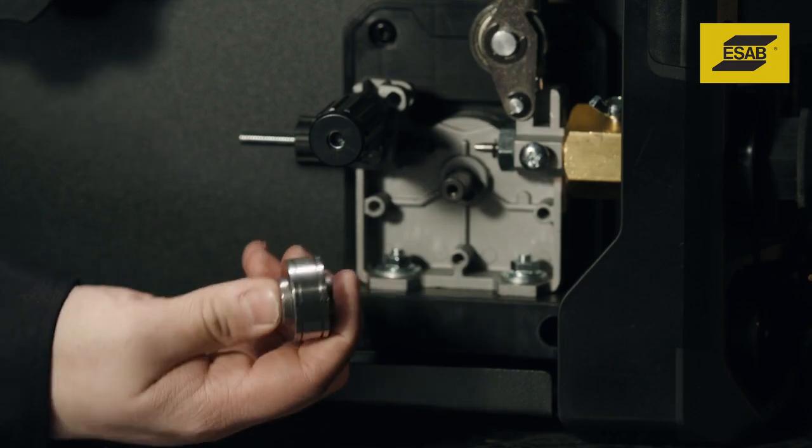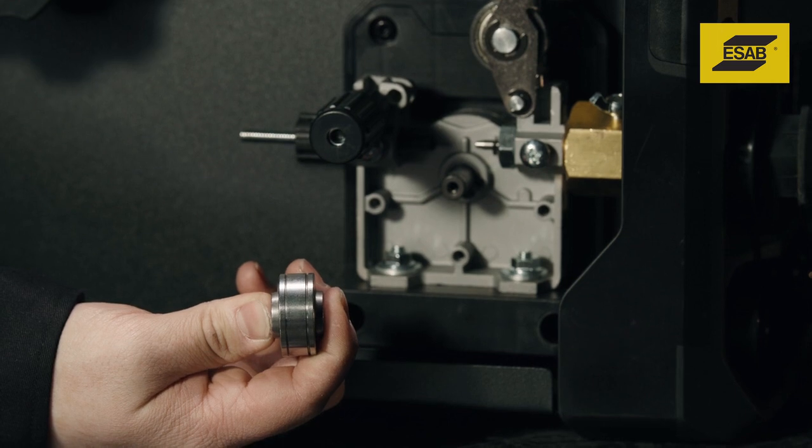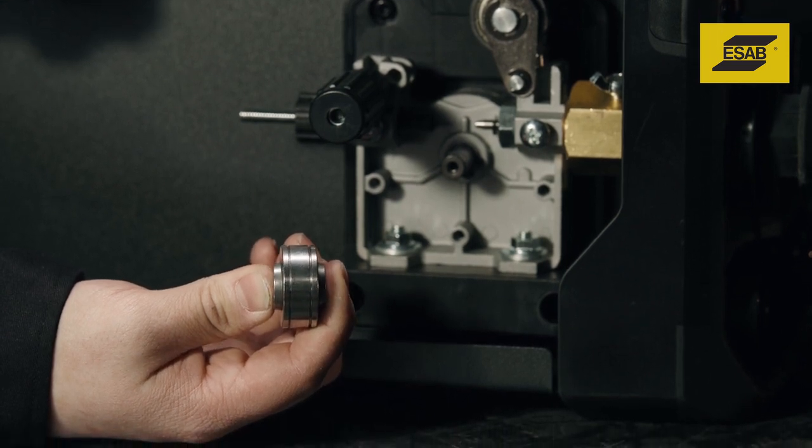A smooth dual-groove feed roll comes installed. Use smooth-groove feed rolls to weld with solid steel and stainless steel wires.